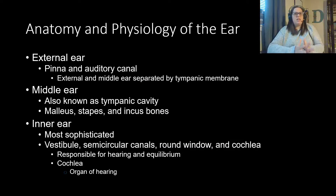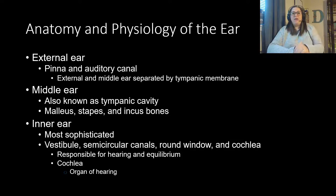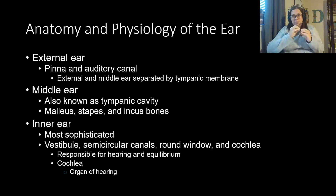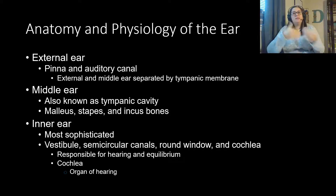Now let's look at the anatomy of the ear, which has three sections. The external ear includes the pinna — the funnel-shaped outer structure — and the auditory canal leading into the skull. The external and middle ear are separated by the tympanic membrane, or eardrum. The middle ear, also called the tympanic cavity, sits behind the eardrum and contains the three ossicles: the malleus, stapes, and incus — the smallest bones in the body — which vibrate in response to sound.